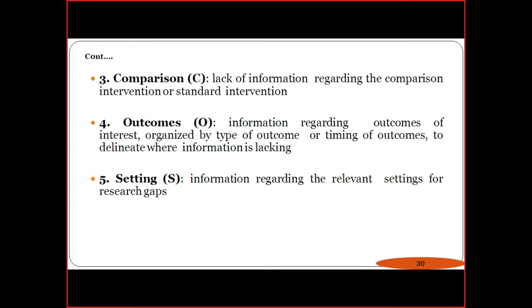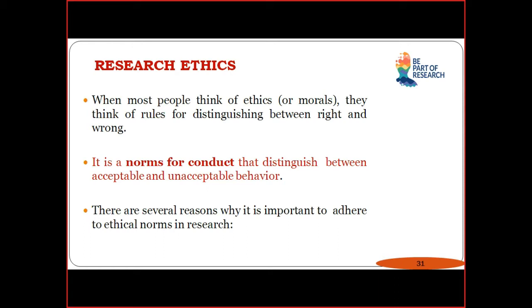The next important part is research ethics. While publishing a paper, every journal conducts plagiarism detection — cut and paste is not allowed. Some journals mention a maximum of 70–80 percent originality required, meaning your own contribution should be at least 80 percent, with a maximum of 20 percent borrowed content. Some people think of ethics as rules for distinguishing between right and wrong, or the same research being done by different people getting different results.